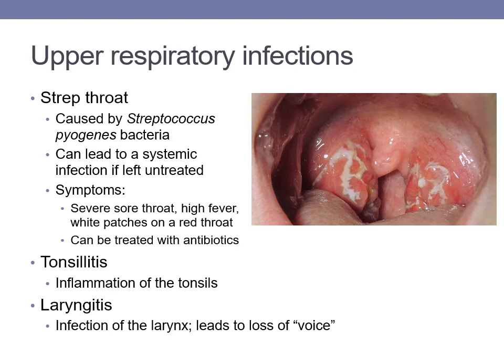Strep throat, tonsillitis, and laryngitis are all upper respiratory tract infections. Strep throat is caused by the Streptococcus pyogenes bacterium. This infection causes severe sore throat, high fever, and white patches on a red throat, appearing on the tonsils. Strep throat can be easily treated with antibiotics, but if left untreated, the bacteria can spread and cause more serious infections like scarlet fever.